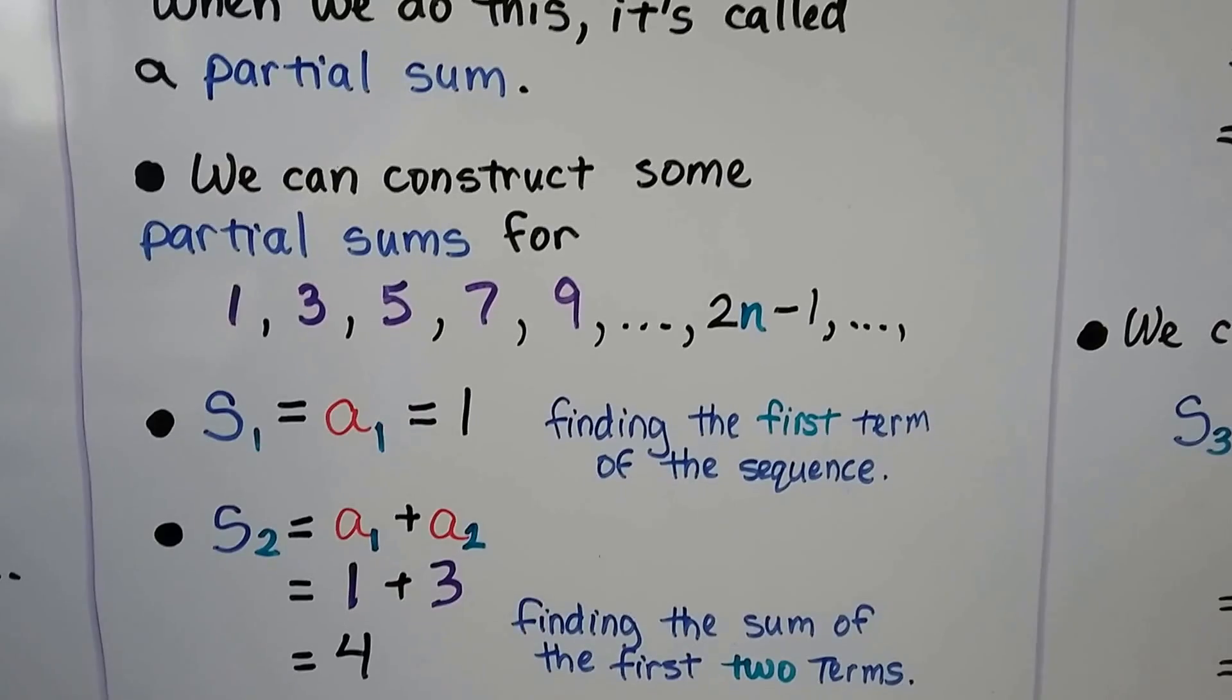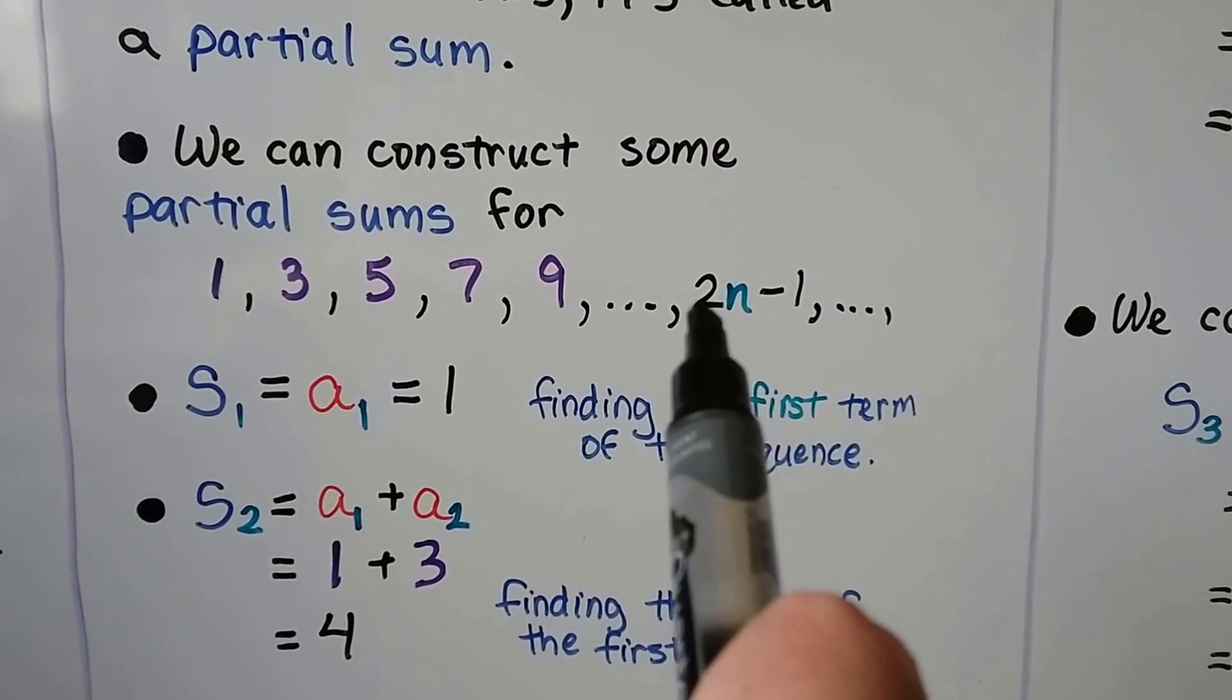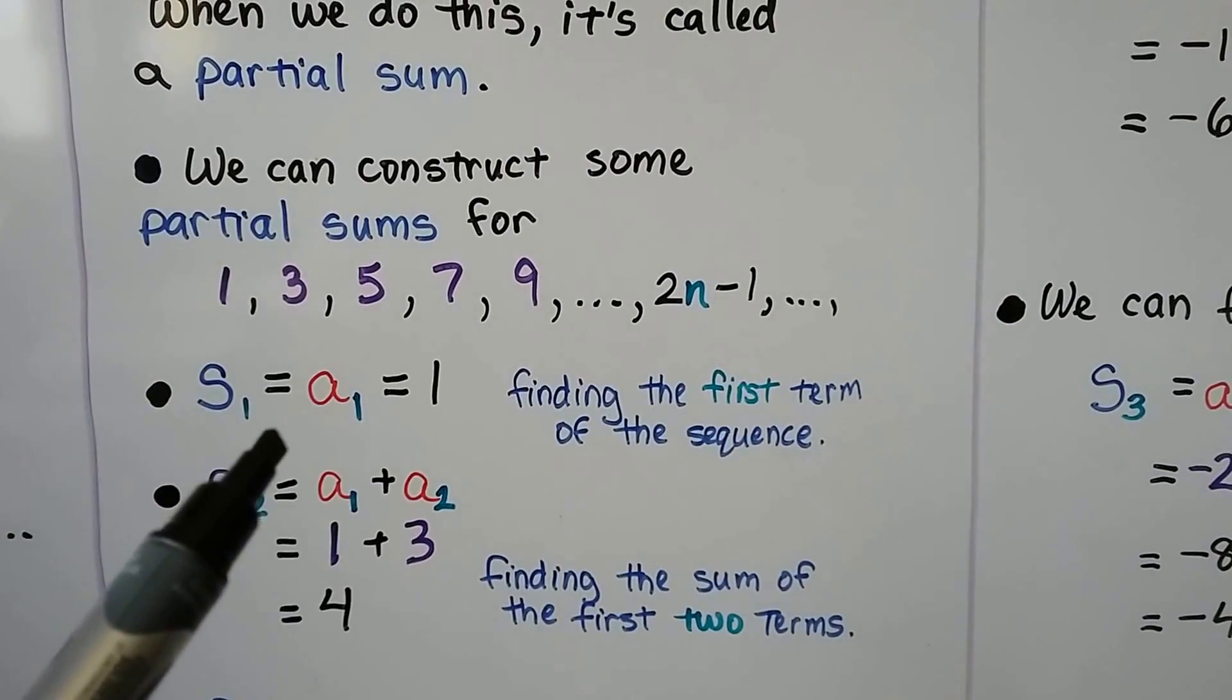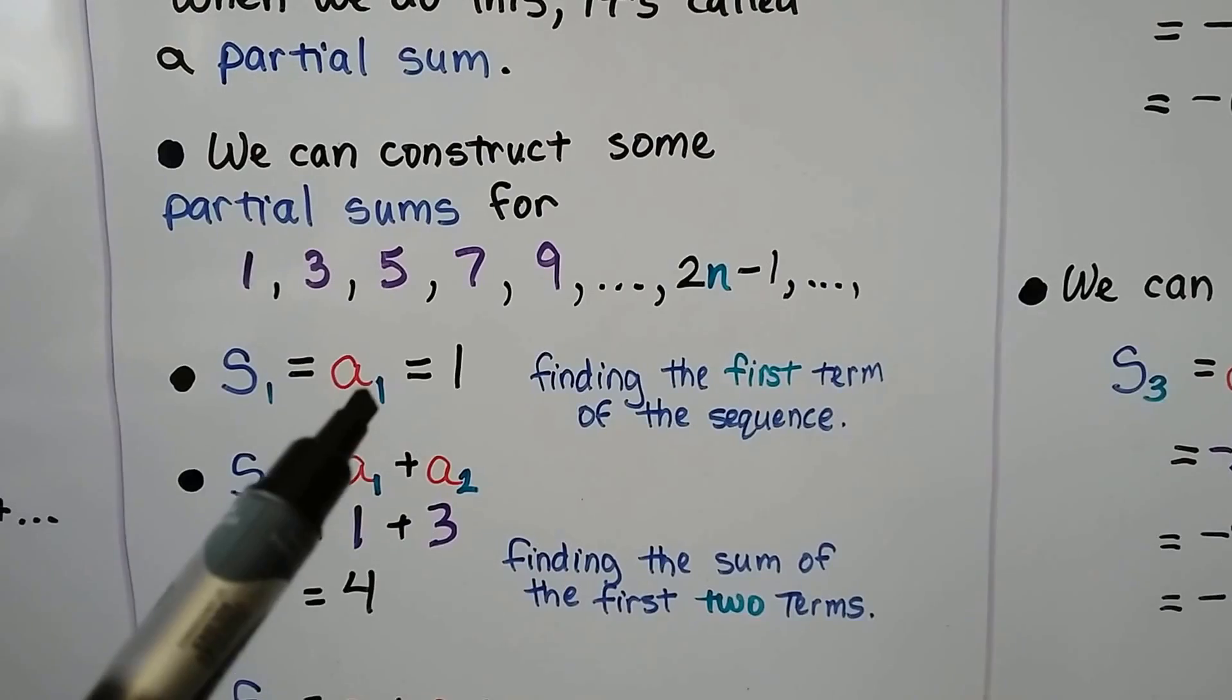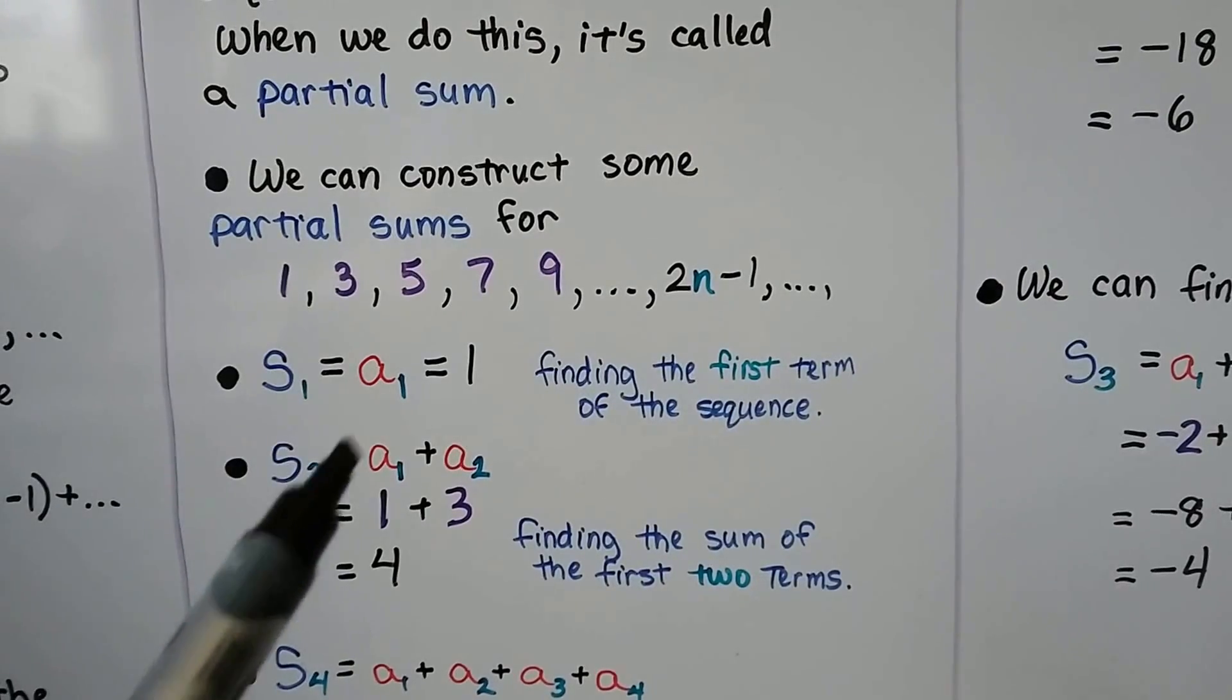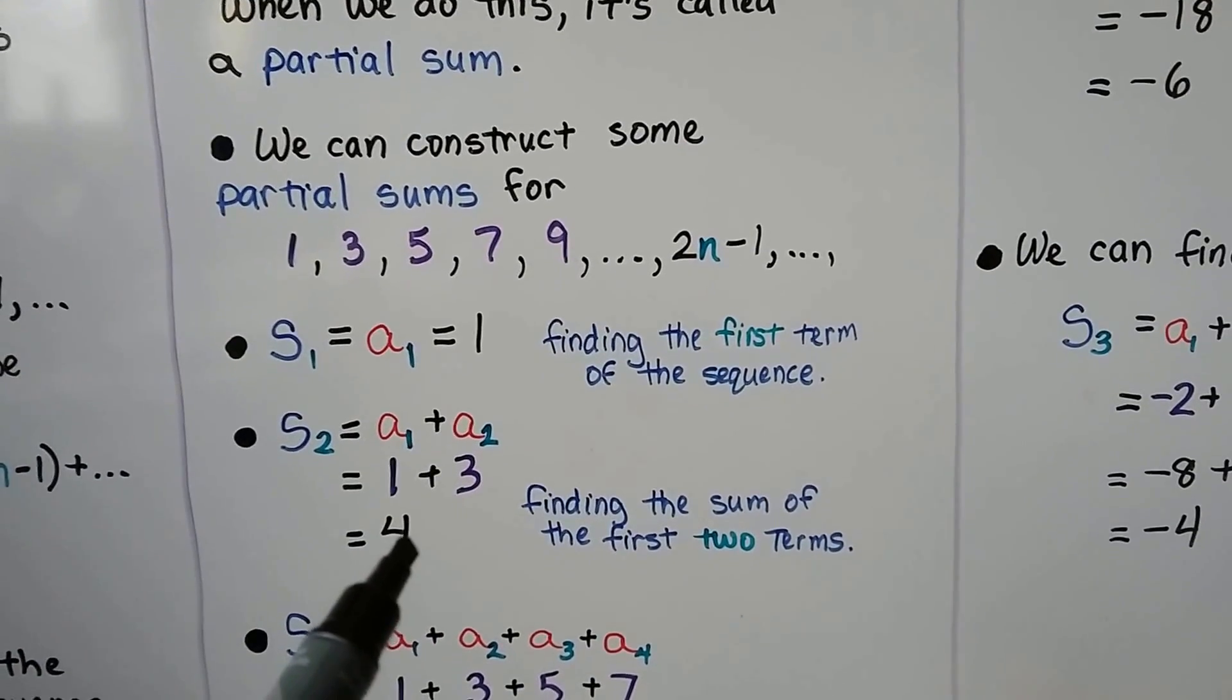We can construct some partial sums for 1, 3, 5, 7, 9, ..., 2n - 1. For S_1, we would find the first term of the sequence. That's a_1 = 1. For S_2, we would find the sum of the first two terms. So we have 1 and 3. That's 1 + 3 = 4.